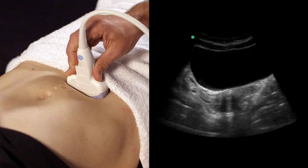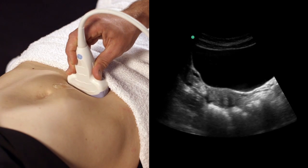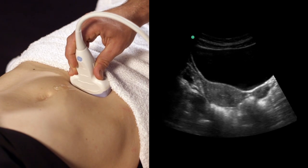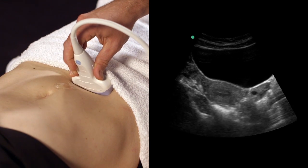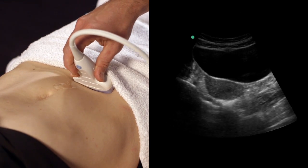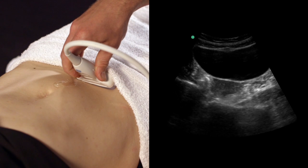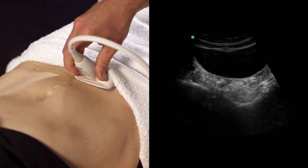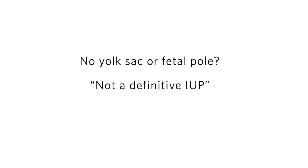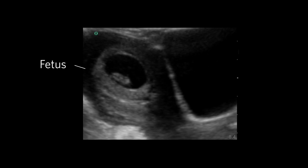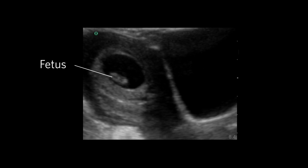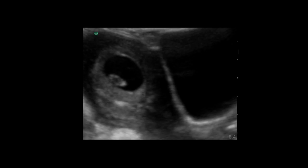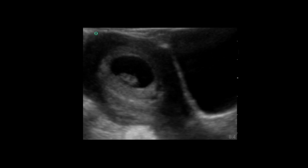You must then ensure the pregnancy is contained within the uterus. If you do not see a yolk sac or a fetal pole within the uterus, you cannot confirm an IUP — you would declare "not a definitive intrauterine pregnancy." If you see a beating heart and you are confident it is in the uterus, you can confirm a live IUP.